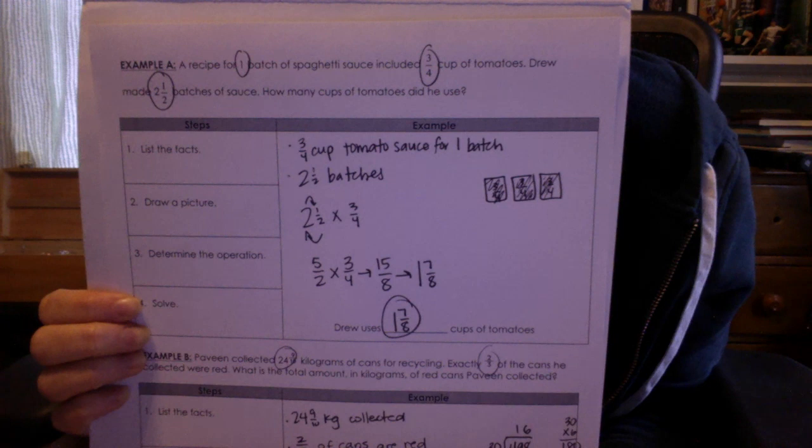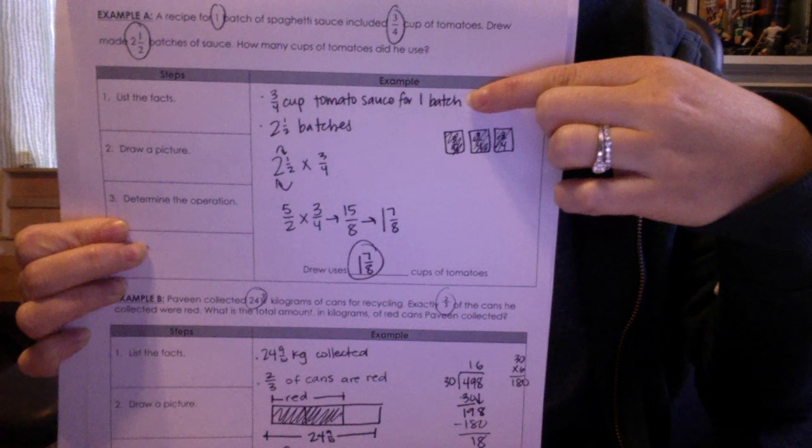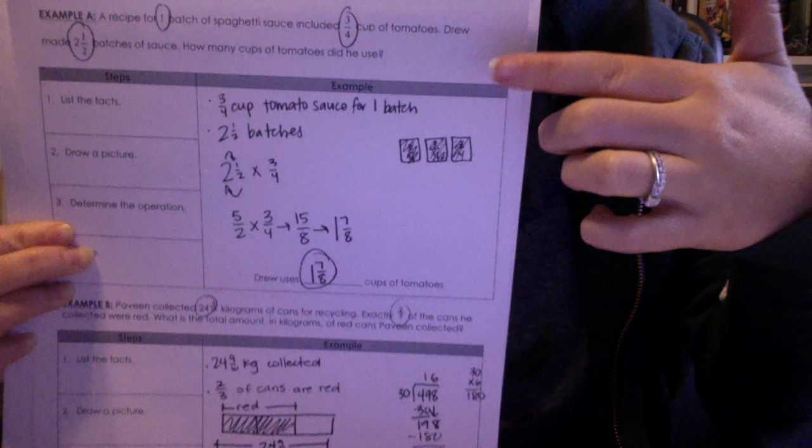So notice I circled 3 numbers. So I have 2 bullets here, and I just put in 1 batch, the third number, with the first bullet. So 3 fourths of a cup of tomato sauce makes 1 batch, and we want to know how many cups we need for 2 batches.